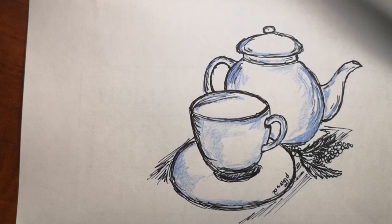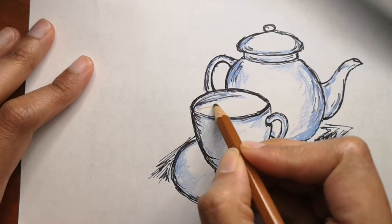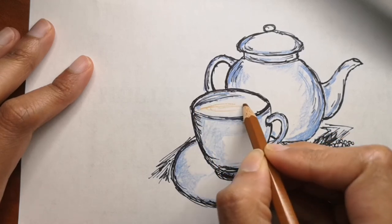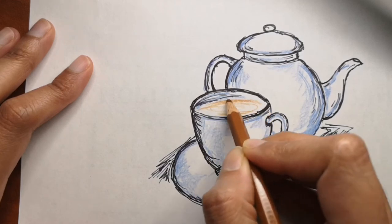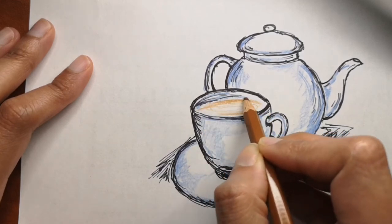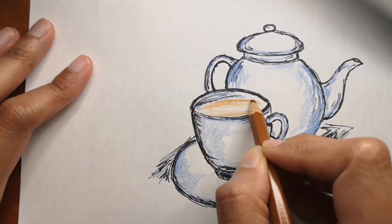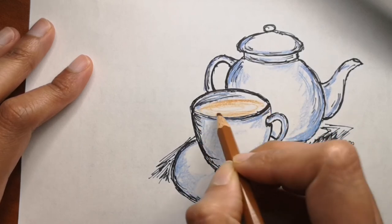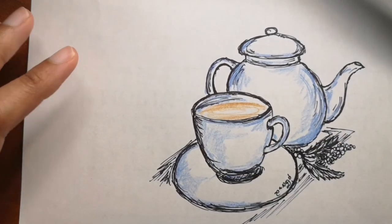I'm going to color the area where it's sitting on a little brown so that it looks like it's a table. Inside the cup I'm going to draw some actual tea or coffee, whichever you want to make it look like. I'm just going to use some brown and color that, and I'll show you how the full color drawing looks like at the end of this video.